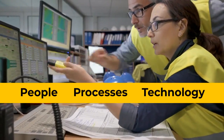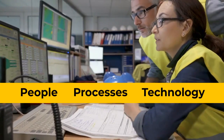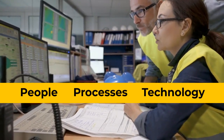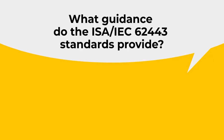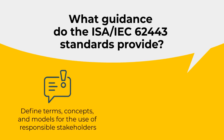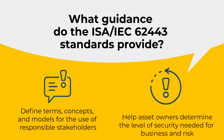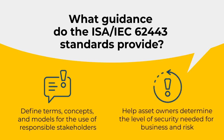The 62443 series addresses the security of industrial automation and control systems throughout their life cycle. The 62443 standards define common terms, concepts, and models that can be used by all stakeholders responsible for control systems cybersecurity, and help asset owners determine the level of security required to meet their unique business and risk needs.